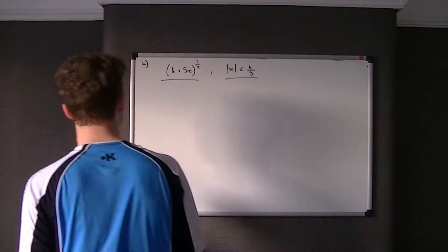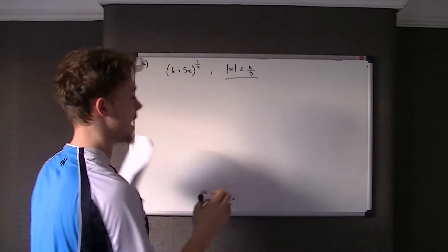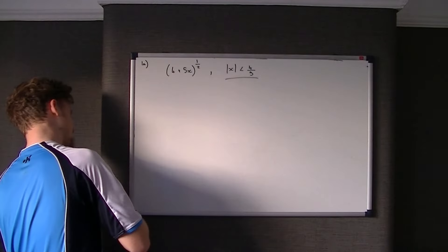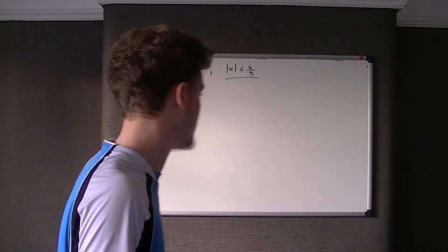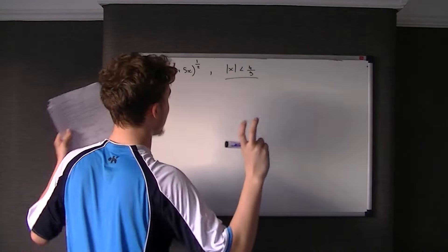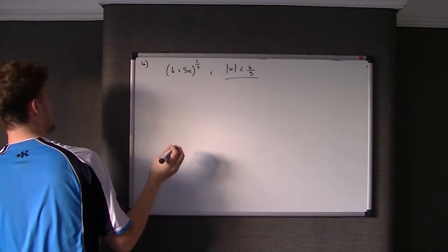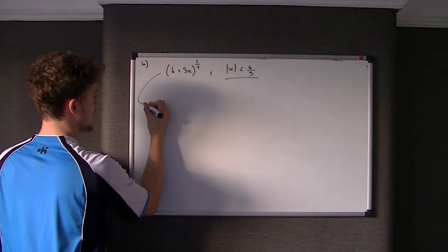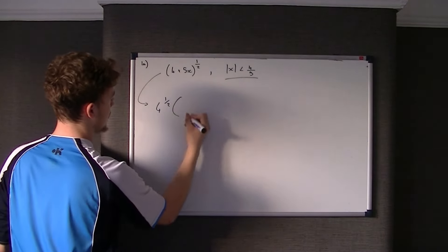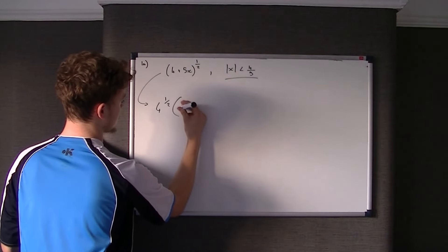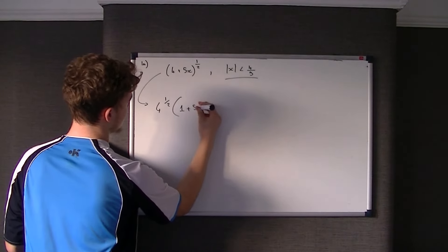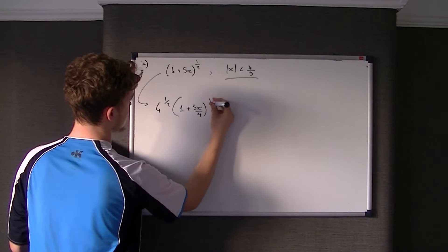The first thing we need to do is put this in the correct form. It's currently 4 plus 5x, but we need it in the form (1 + Ax)^n, because that's the expansion we use in C4. So we take out 4 as a common factor — we divide the inside by 4 and keep the power with the 4. That gives us 4 to the power of a half, times (1 + 5x/4) all to the power of a half.